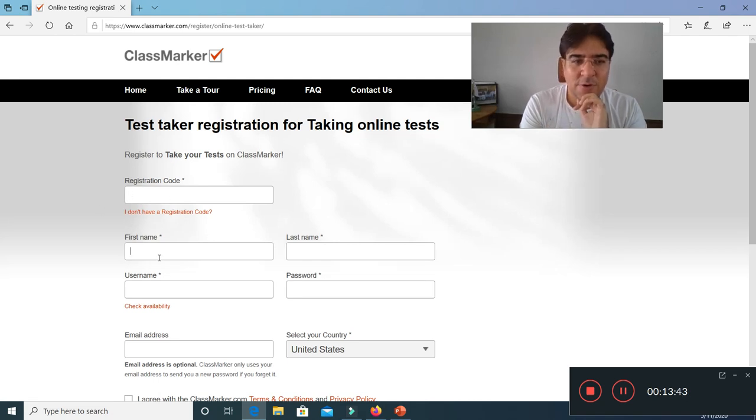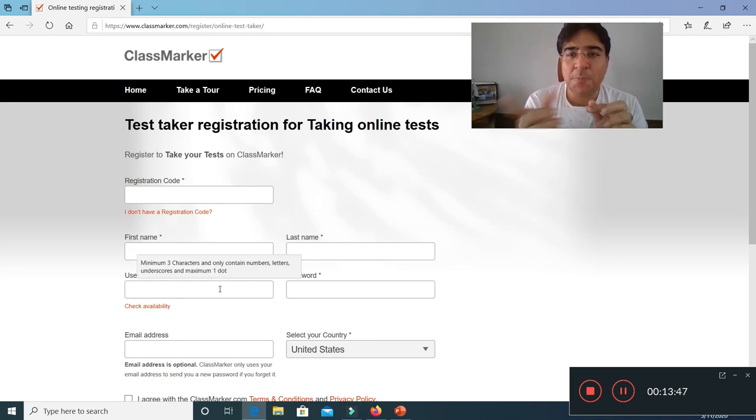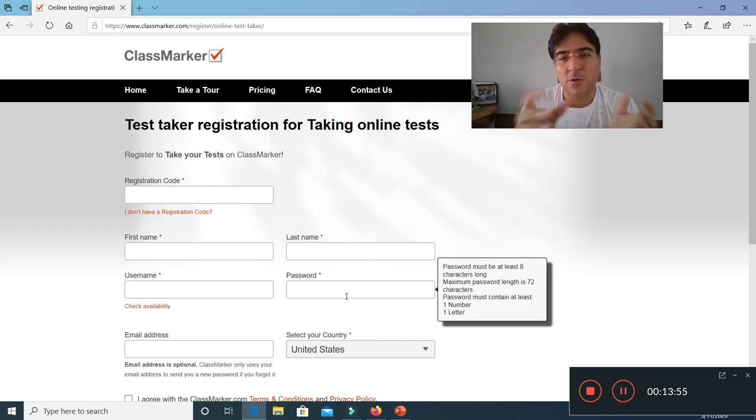And then you put the code here. Code here. Your name. Your last name. User name. User name should be your name, then 001. For next test it will be 002 with a new code. And password, anyone you want. So once you receive the code, you register yourself to this website.